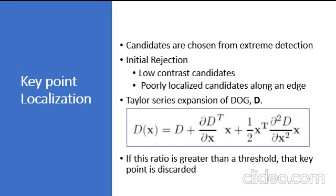Difference of Gaussian has higher response for edges, so edges also need to be removed. For this, a concept similar to Harris corner detector is used to compute the principal curvature. We know from Harris corner detector that for edges one eigenvalue is larger than the other. So here they use a simple function. If this ratio is greater than a threshold, that key point is discarded.